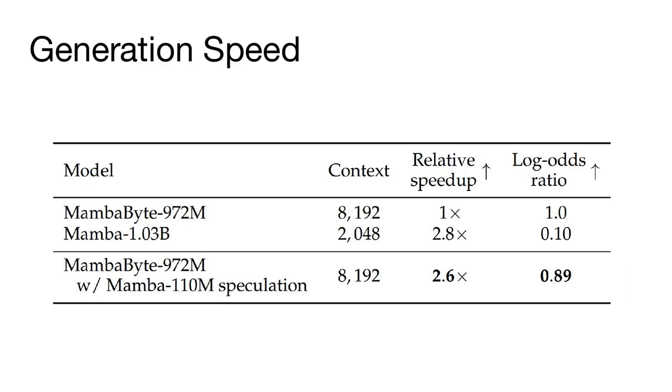Finally, when comparing subword-based models to byte-level models, it's fair to bring in the speculative decoding that we discussed in the previous section. When we do this, we can see that we're able to get a 2.6 times relative speedup when using speculative decoding with MambaByte. This makes the byte-level model comparable in speed to the full subword Mamba model of a similar size.